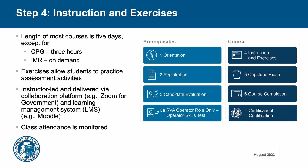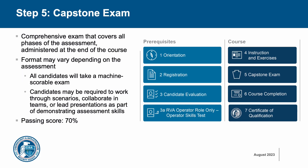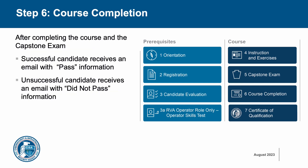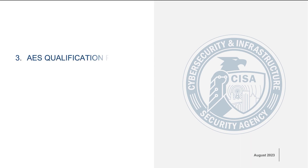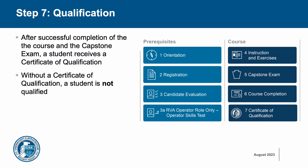Now that you've passed your CE exam and OST for operator candidates, it's class time. Most courses are five days of instruction. All courses feature exercises to give you an opportunity to practice assessment activities. Class attendance is monitored. You're now ready for the final exam. The AES Capstone exam covers all aspects of a specific assessment. It consists of a multiple choice, machine-scorable test, and for some courses, a final report. After you complete the AES Capstone exam, you will receive an email — good news if you passed, or not so good news if you did not. When you complete the course and pass, you receive a Certificate of Qualification in your Moodle account. Congratulations! The certificate means that you're qualified as an AES Assessor in your training course role.